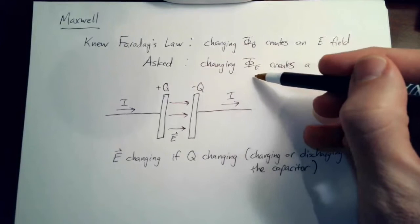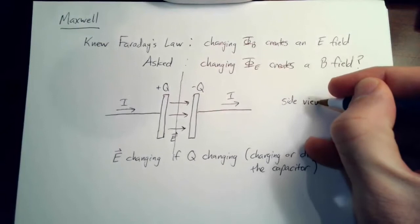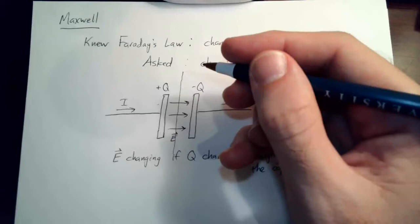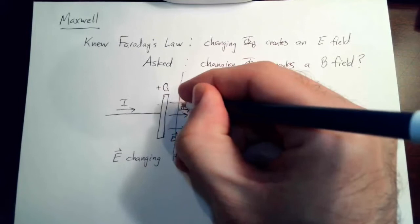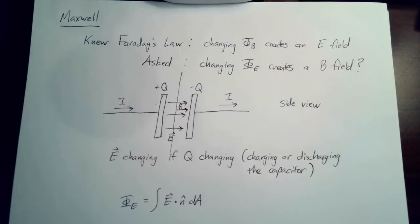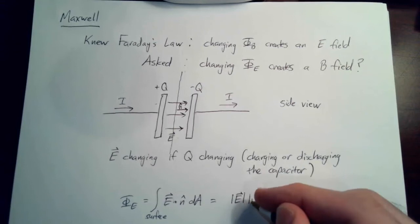Let's find the electric flux. We draw a surface right down the middle — looking at it edge-on it's like a rectangular sheet inserted between the two plates. We orient this rectangular sheet so that its normal points to the right, parallel to the electric field. Using the flux formula — the same formula we've seen for magnetic flux but with E instead of B — since E and n-hat are parallel, E dot n-hat just becomes the magnitude of E times cosine of zero, which is one.